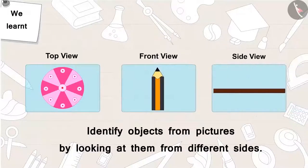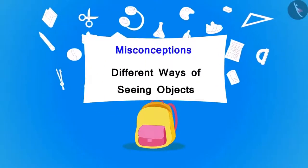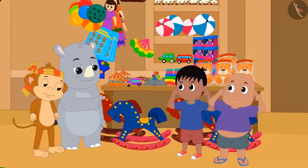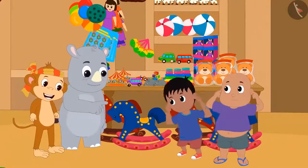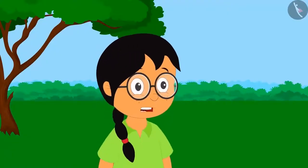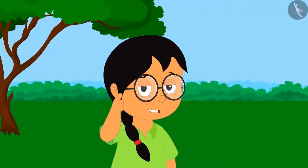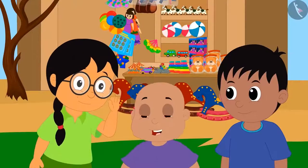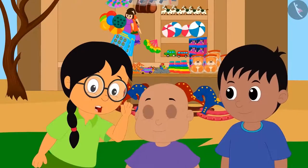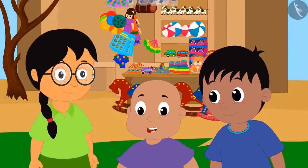In the previous video, we learnt to identify objects with pictures by looking at them from different sides. When Gaggoo was teaching a lesson to Raju and Bablu, Minu was watching them from a distance. Minu decides to help Raju and Bablu, and whispers in Raju's ear that she is going to show Gaggoo that they are very smart.